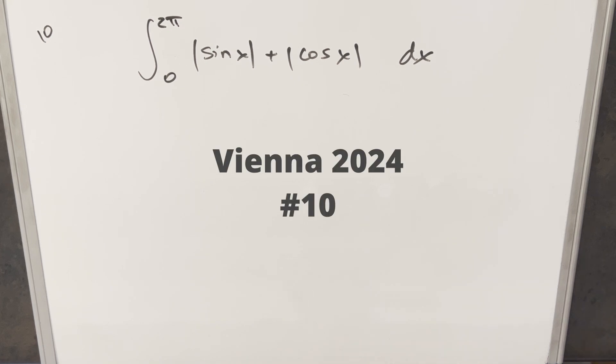Okay, we have here today an interesting integral. This one's from the Vienna Integration B2024, problem 10. We have an integral from 0 to 2π of the absolute value of sine x plus the absolute value of cosine x dx.